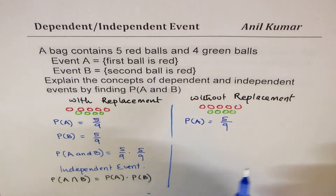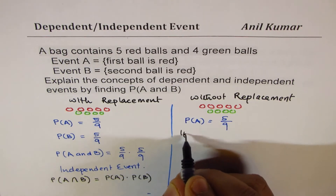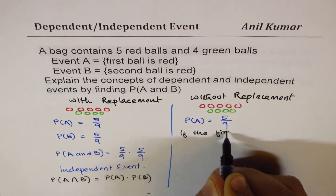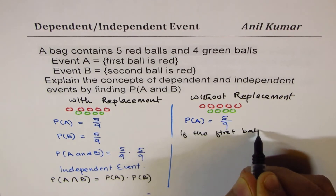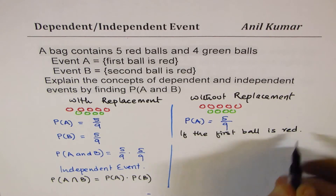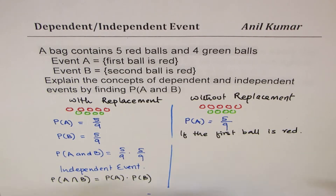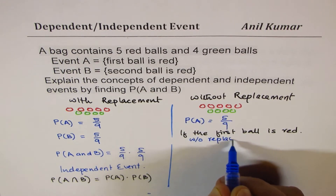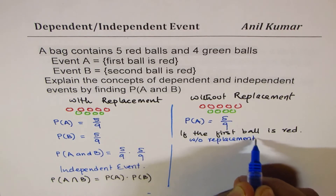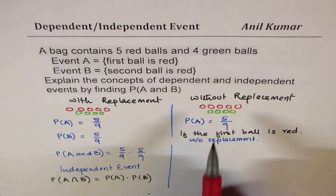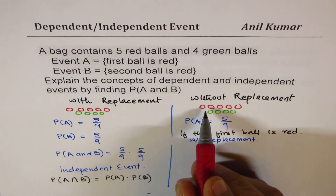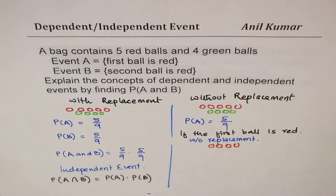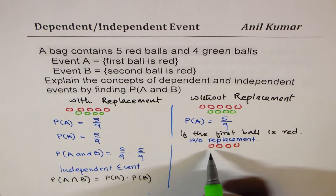For the second red ball, we put a condition: if the first ball is red and we are not replacing it — we are talking about without replacement — then this becomes a conditional probability. We are left with just four red balls and four green balls.